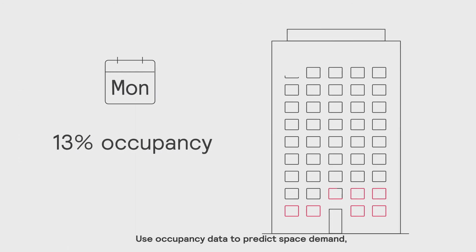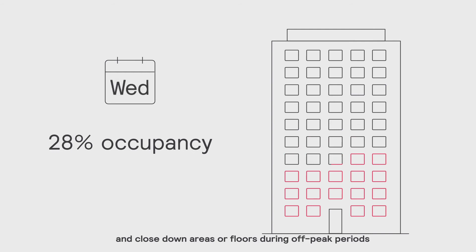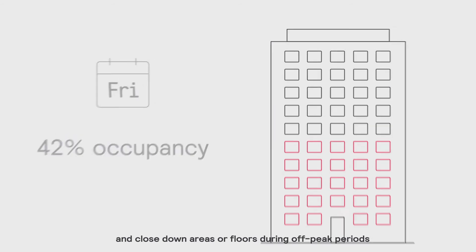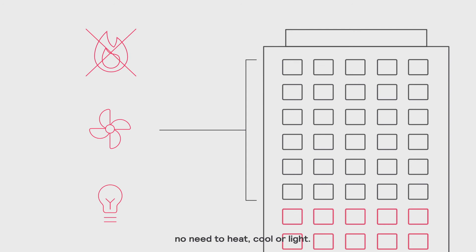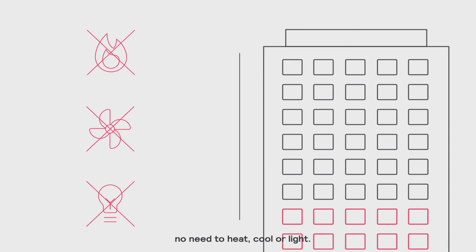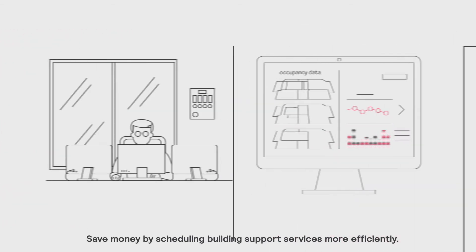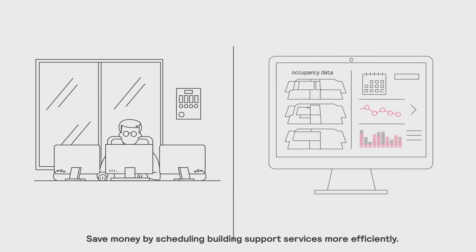Use occupancy data to predict space demand and close down areas or floors during off-peak periods — no need to heat, cool, or light them. Save money by scheduling building support services more efficiently.